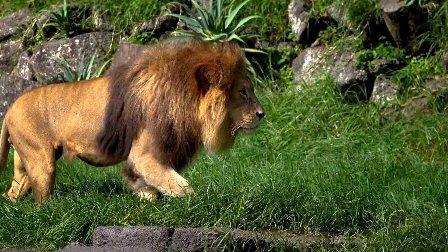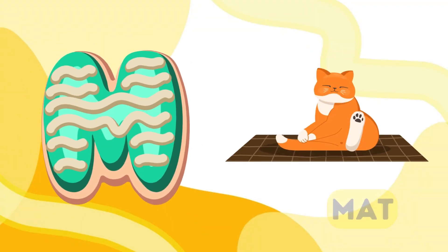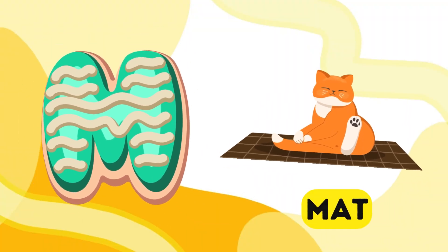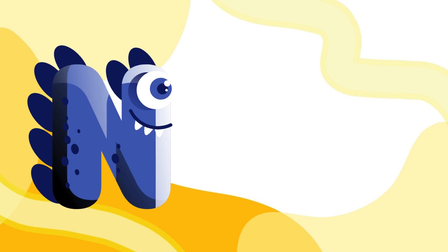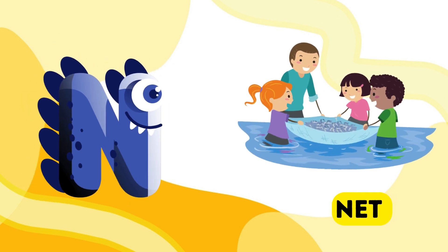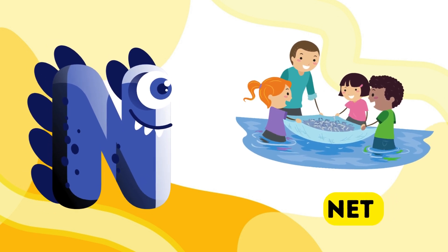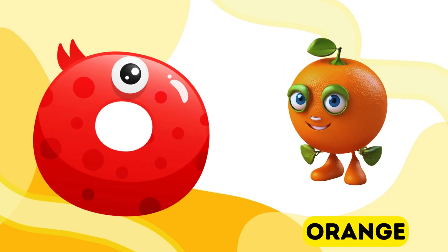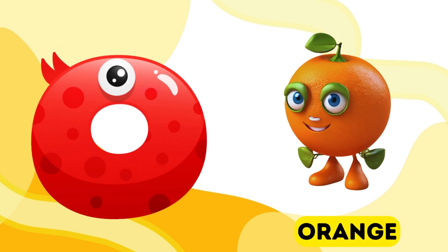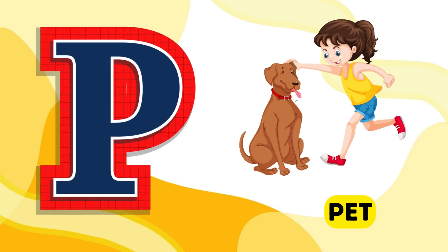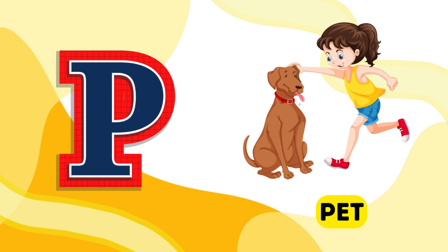M is for mat, m-m-mat. N is for net, n-n-net. O is for orange, o-o-orange. P is for pet, p-p-pet.